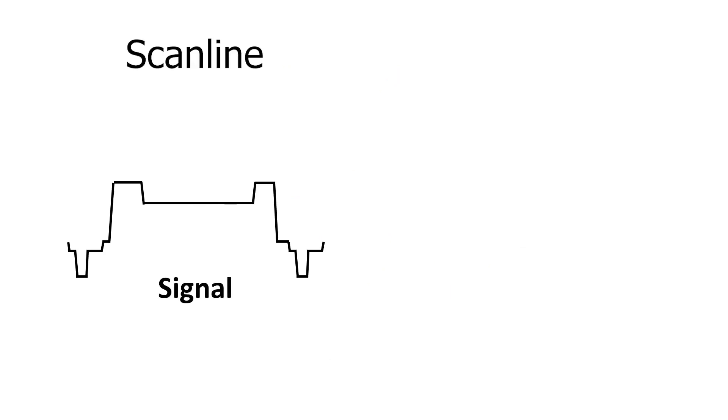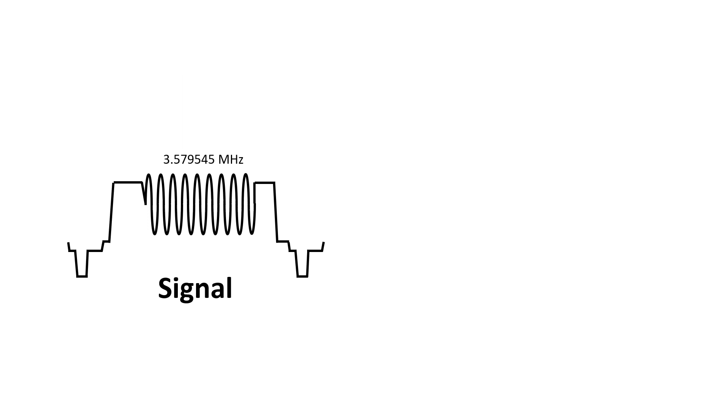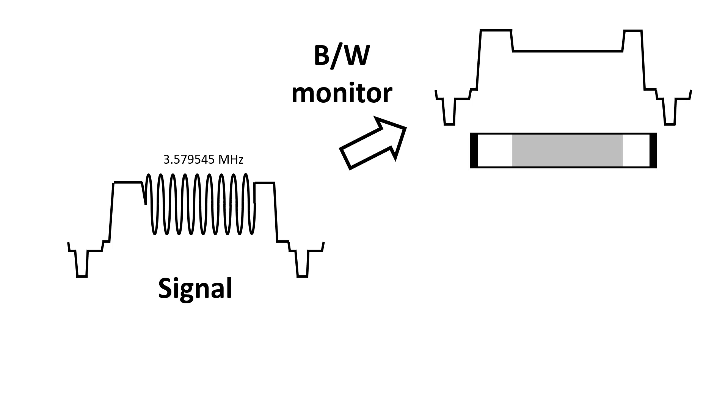Let's have a look at our standard video signal, but add this 3.579545MHz signal on top of it. When we present this signal to a black and white TV, the electronics inside the TV flatten out this sine wave, and we only see the DC offset. As a result, it displays this sine wave as grey within the scan line.